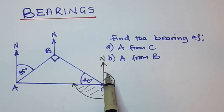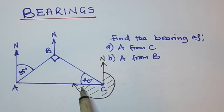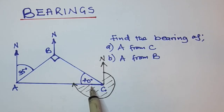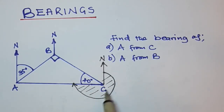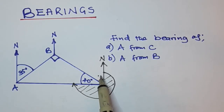A full revolution from the top — north going all the way round — is 360 degrees. So for us to find this bearing, we need to know this angle here, so that we can say the total 360 degrees minus this angle, plus this angle. So how are we going to find this angle?